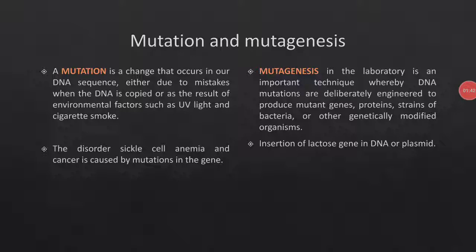Mutagenesis is a lab procedure in which genes, proteins, or strains of bacteria are genetically modified and genetically modified organisms are created. For example, insertion of a gene into DNA or a plasmid is an intentional and site-specific process.